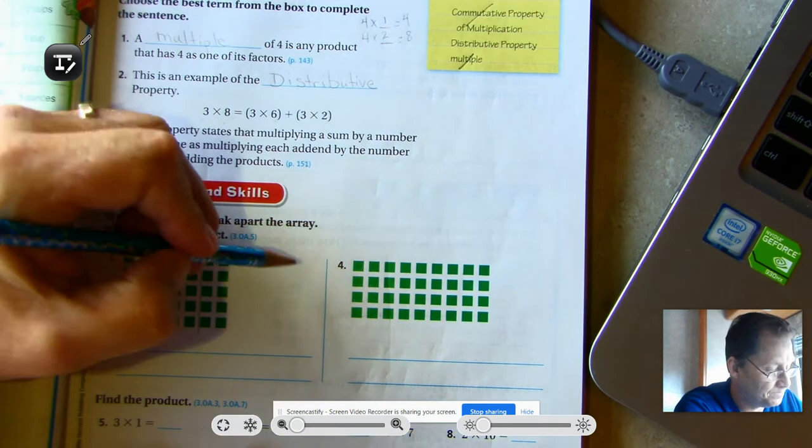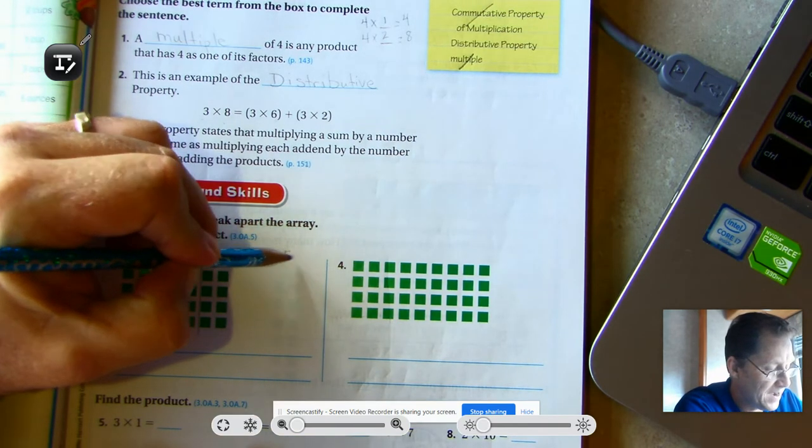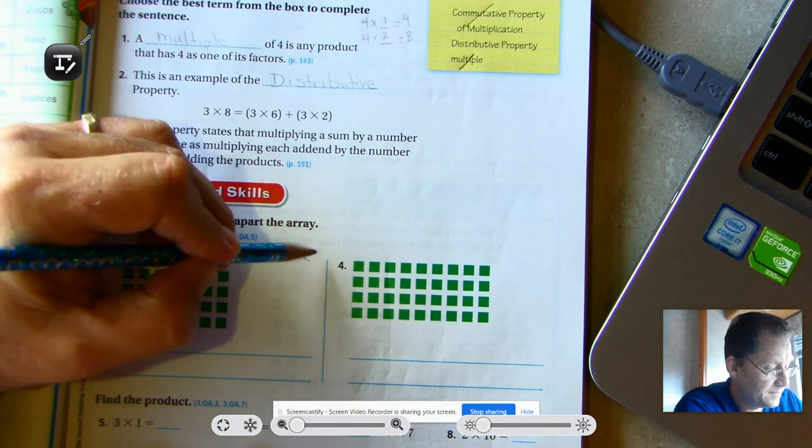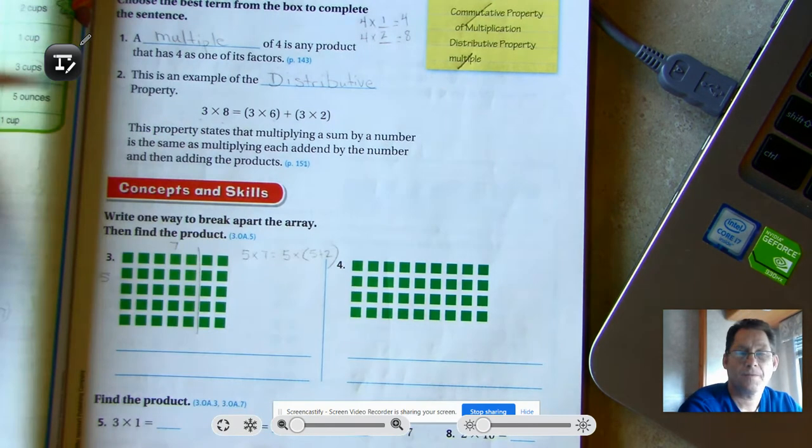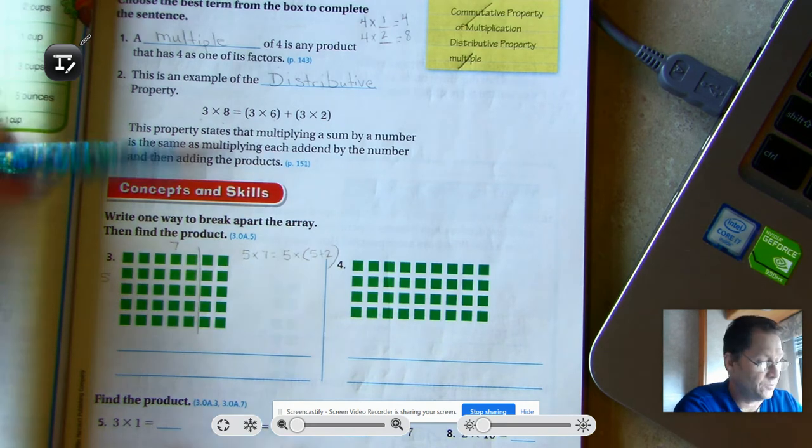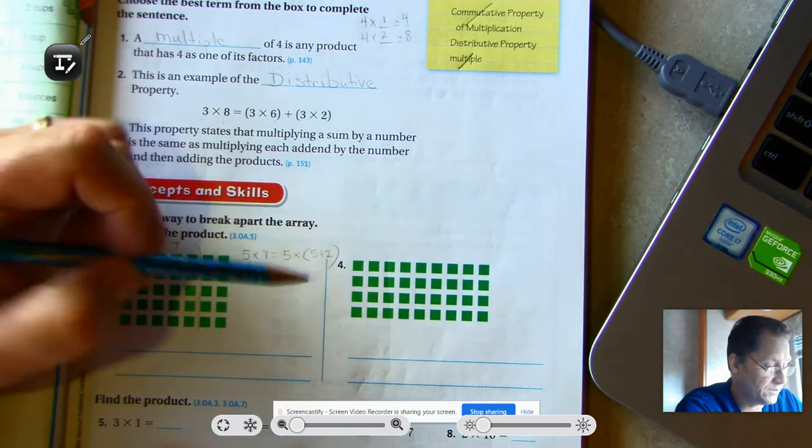So how can we break that up into two smaller factors? Here we go. Five times five plus two. So five plus two is seven. So we're going to split up the seven.